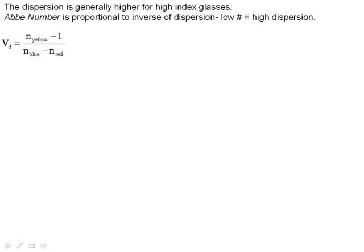And the way we classify the amount of dispersion related to the glass type is something known as the Abbe number, and it's proportional to the inverse of dispersion. In other words, a low Abbe number means high dispersion. And a high Abbe number means that it has a low dispersion.